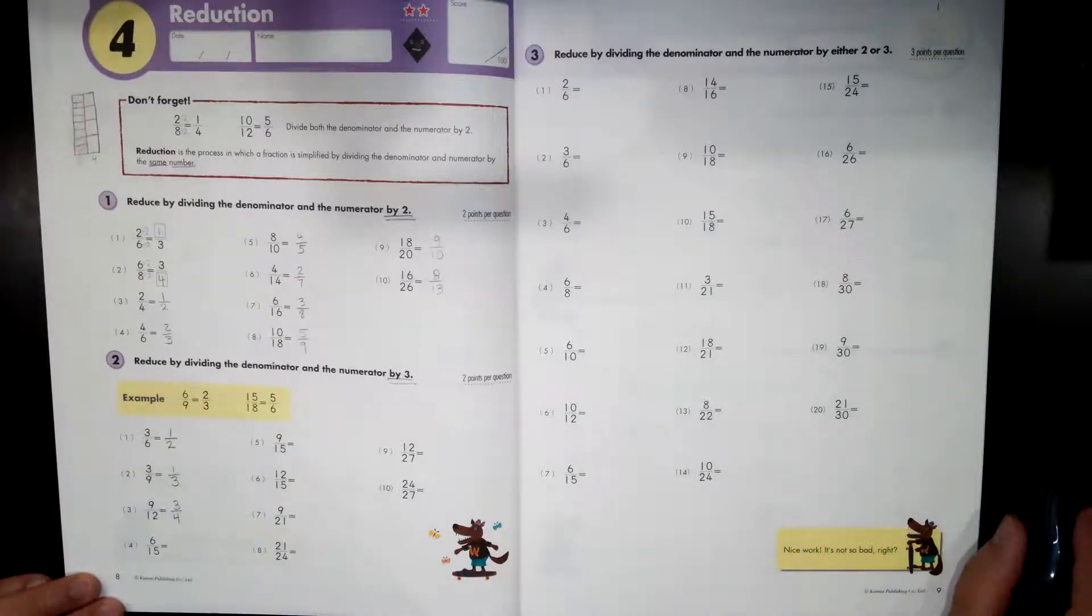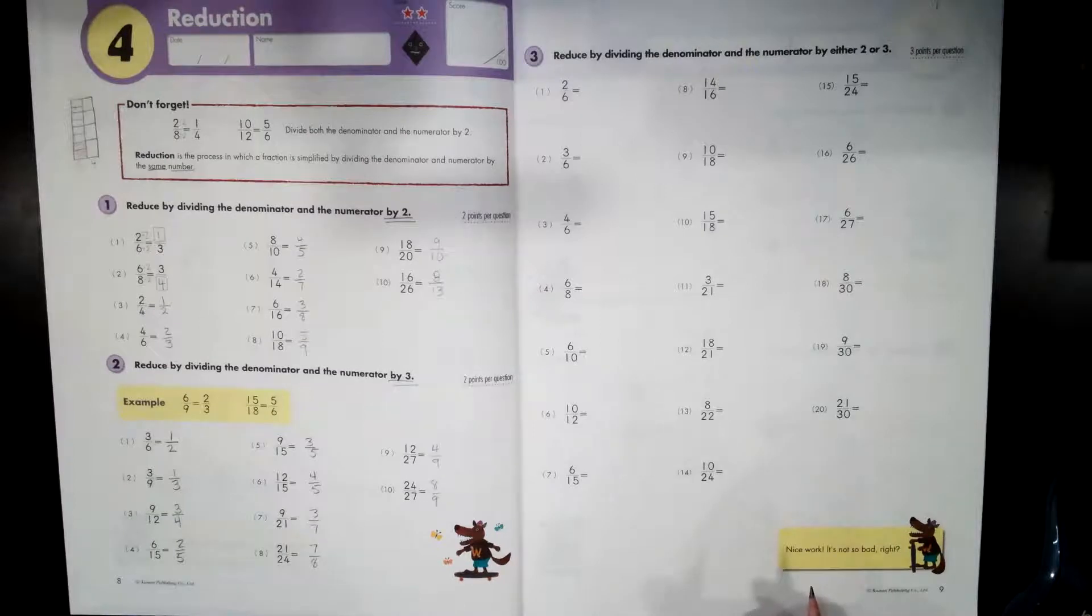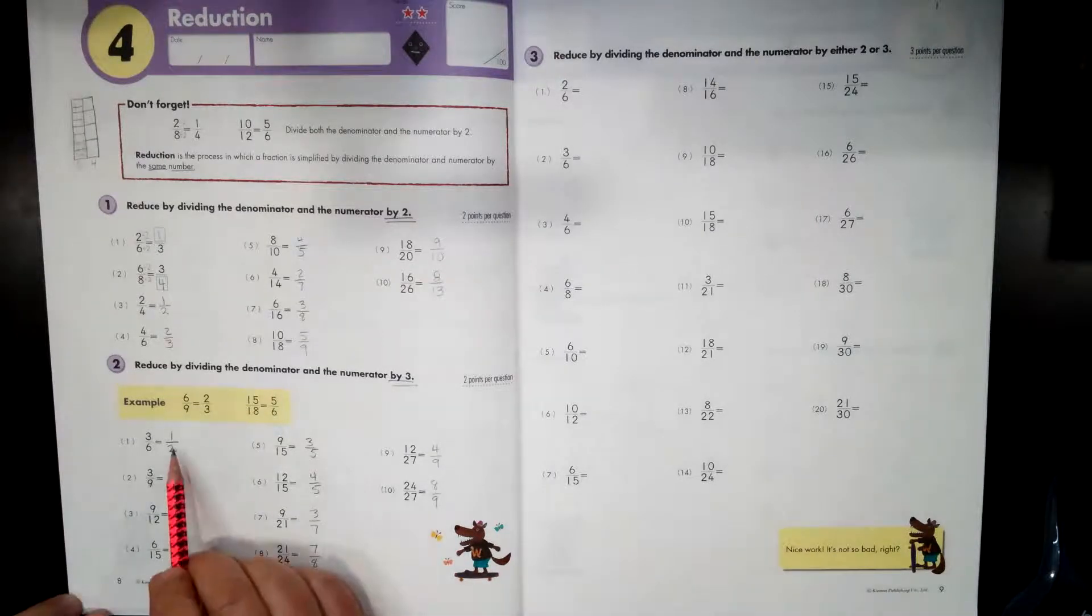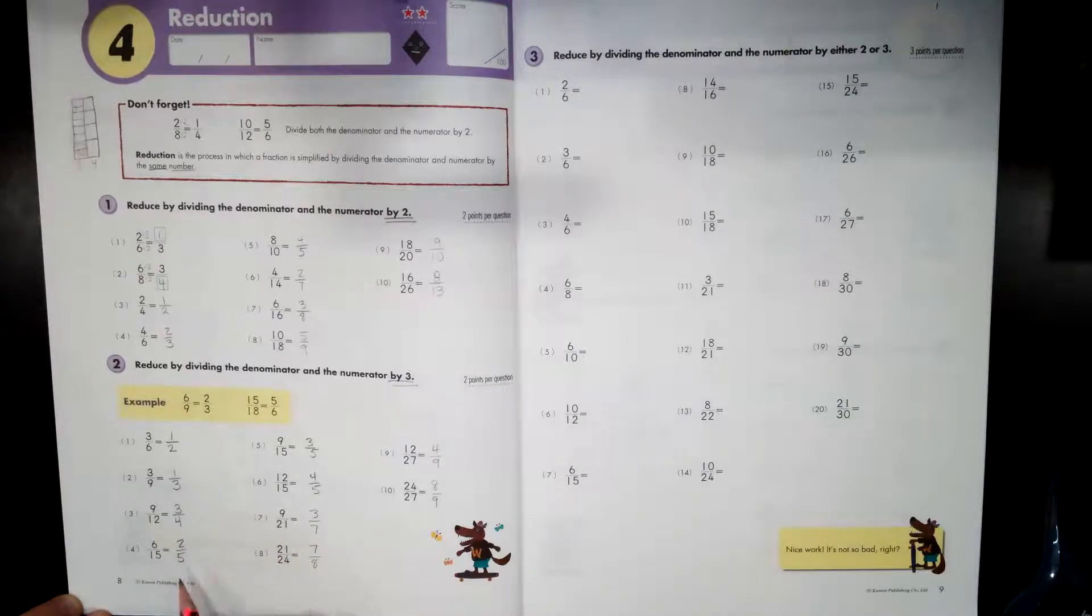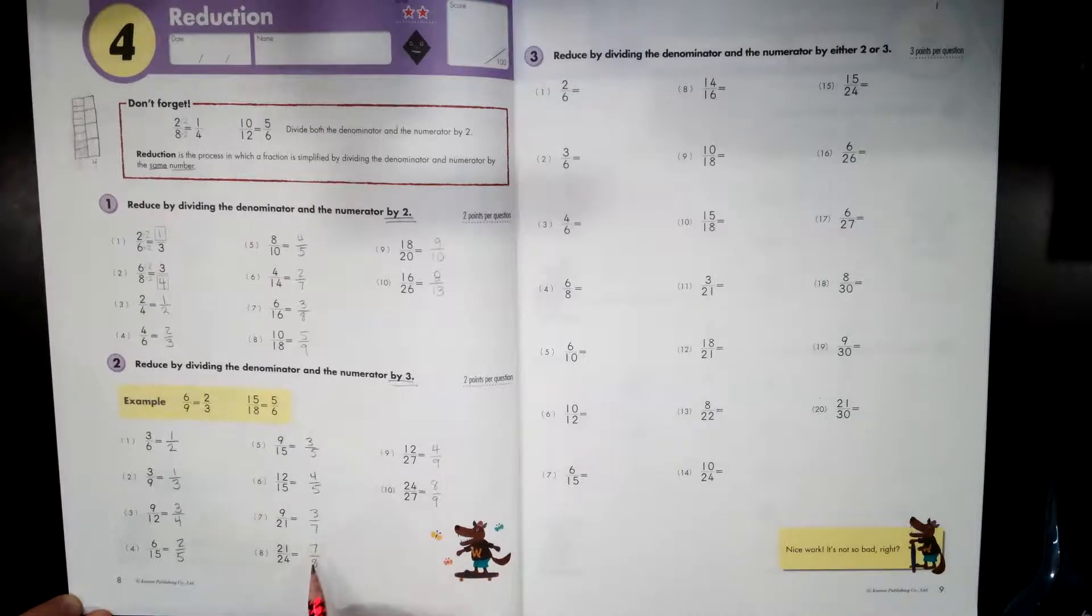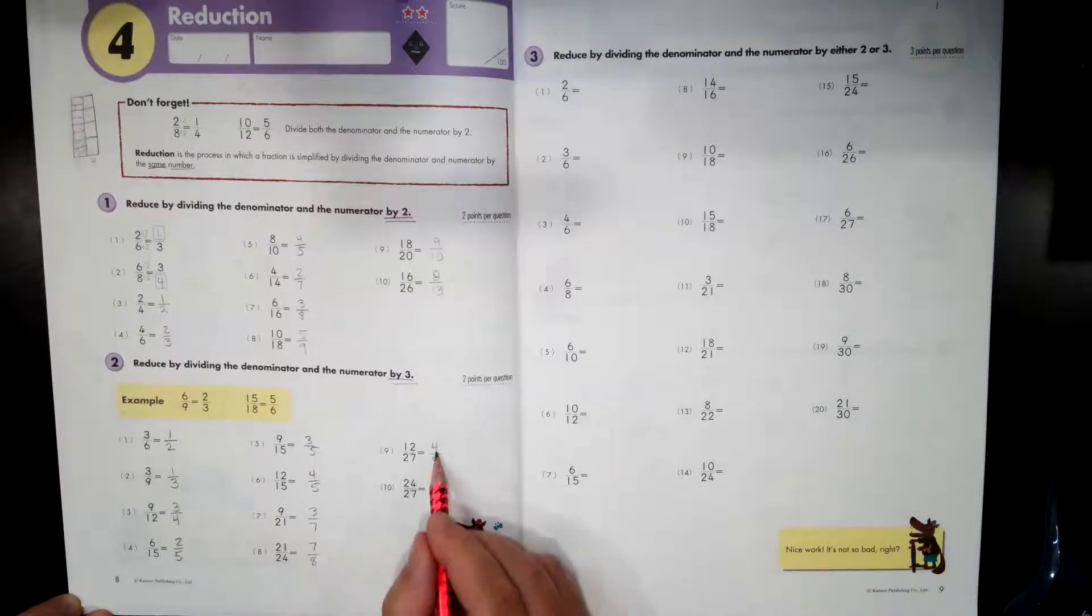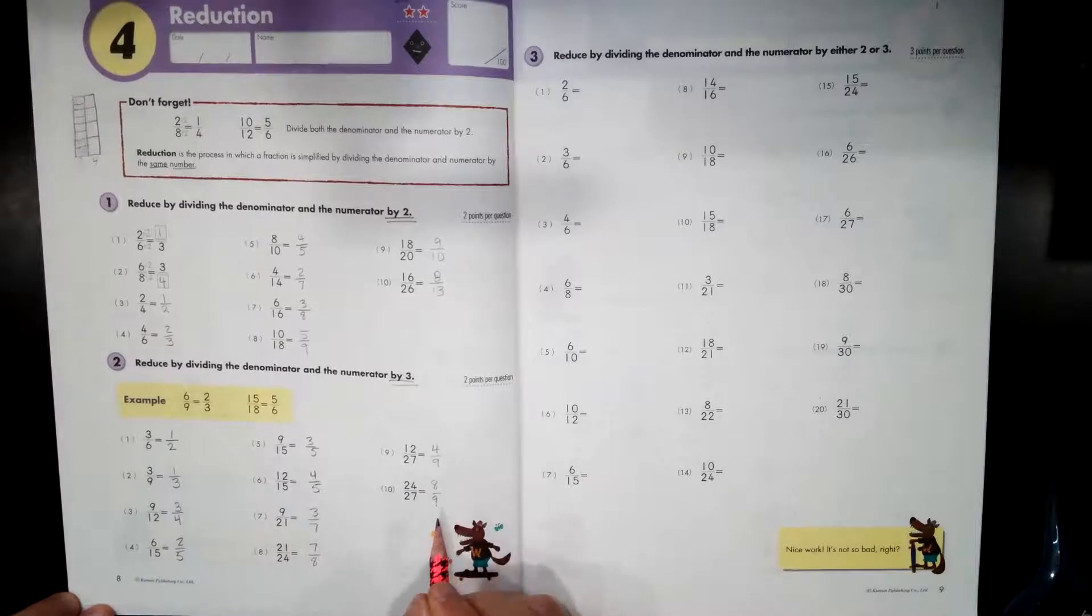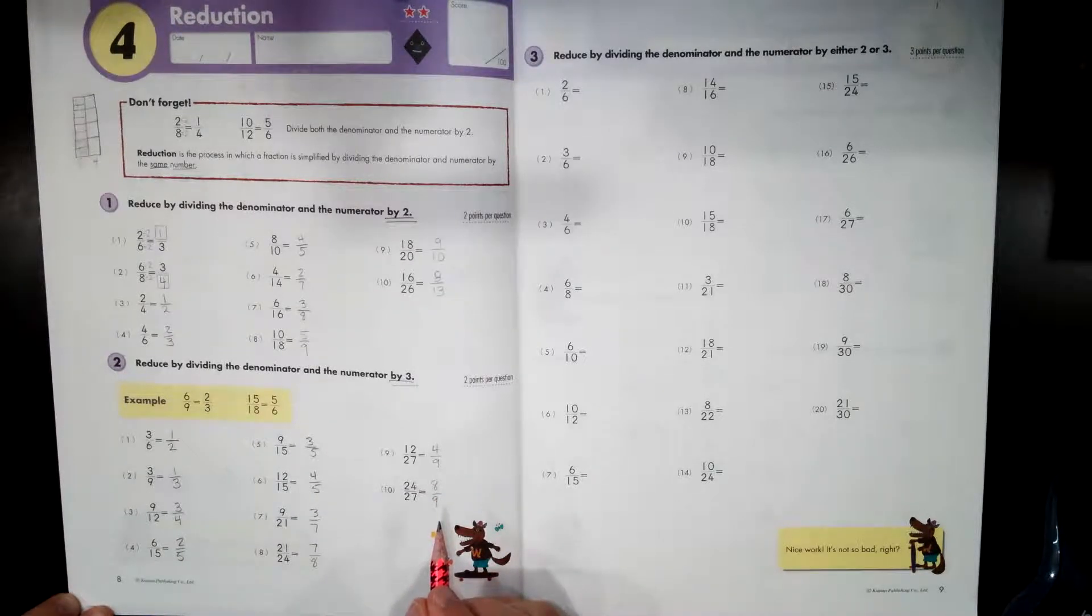I'm going to have you pause the video and finish this and then check your answers. Your answer should look a little bit like this. So we have one half, one third, three fourths, two fifths, three fifths, four fifths, three sevenths, seven eighths, four ninths, and eight ninths. So if you divided each one by three, these are the answers you're going to have.